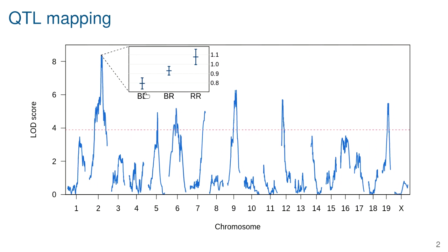That association shows up as a big difference in the quantitative trait when you split mice by genotype at that location. Ultimately we try to narrow this region to individual genes, and that's really been the biggest disappointment — the regions are quite broad with lots of genes, and getting to the individual gene is time-consuming and doesn't always yield a positive result where we really figure out what the gene is.